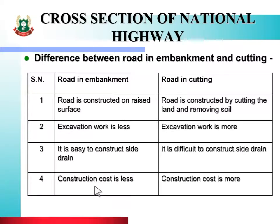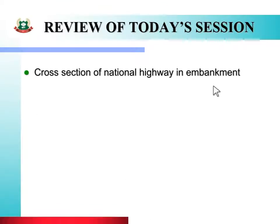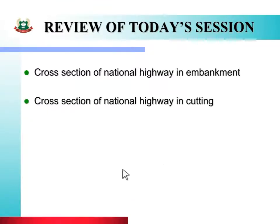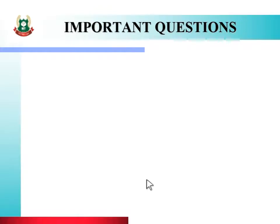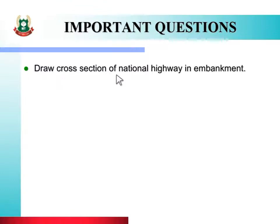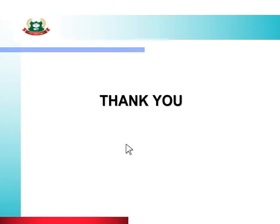In this way, by considering different points you can show the difference between road in embankment and cutting. In today's session we studied about the cross section of national highway in embankment and cross section of national highway in cutting. In the next session we will see numericals on sight distance. The important questions on today's topic are: draw the cross section of national highway in embankment, and draw the cross section of national highway in cutting. Solve these as an assignment. If you face any difficulty, watch the video again, refer to the notes provided, or contact me. Thank you for watching.